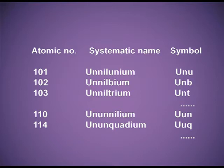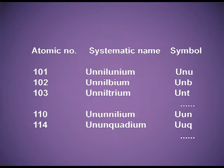Similarly, element with atomic number 103: its name will be Unniltrium, and its symbol is Unt. For atomic number 110: 1 is 'un', again 1 is 'un', and 0 is 'nil', with the name ending 'ium'. The complete name is Ununnil-ium, and the symbol is Uun.